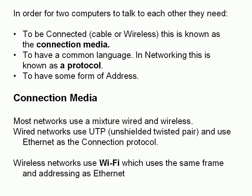For the connection media, most networks use a mixture of wired and wireless. Wired networks use UTP — unshielded twisted pair — and they use Ethernet for the connection protocol. Wireless networks use Wi-Fi, and Wi-Fi is based on Ethernet. It uses the same frame structure and addressing as Ethernet; I just consider it as Ethernet over wireless rather than Ethernet over cable.